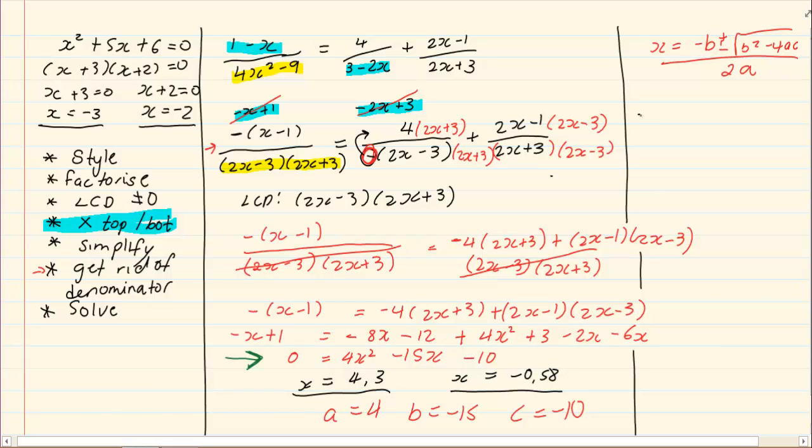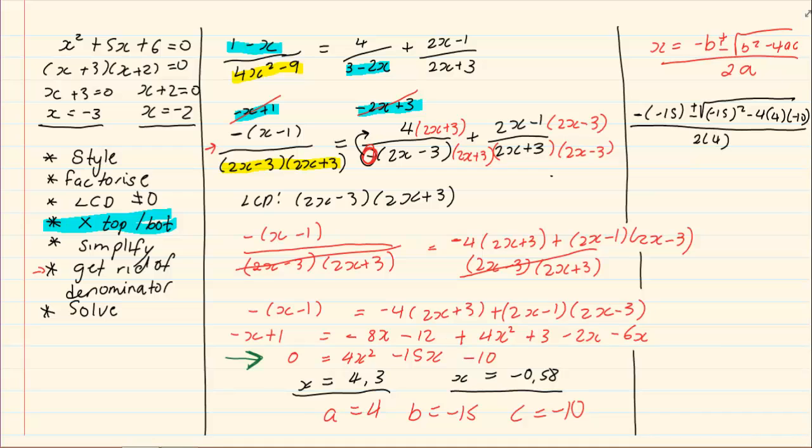x is equal to minus minus 15 plus minus negative 15 squared minus 4 into 4 minus 10. What you must remember when you're doing the formula? Very common, we find that pupils do not put this line. They basically have minus minus 15, and then they have the fraction only on this part, which is incorrect.